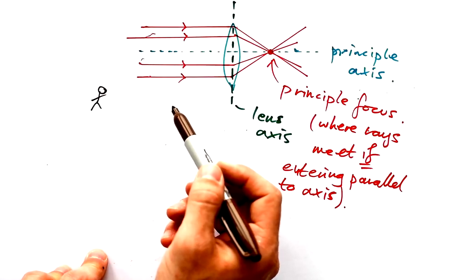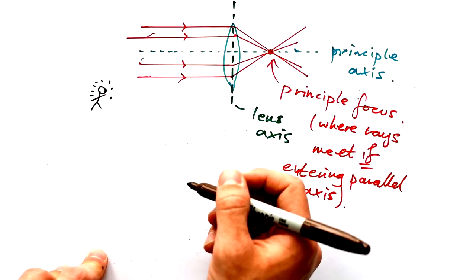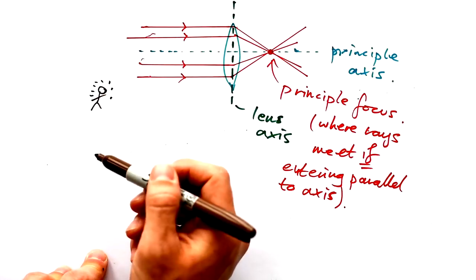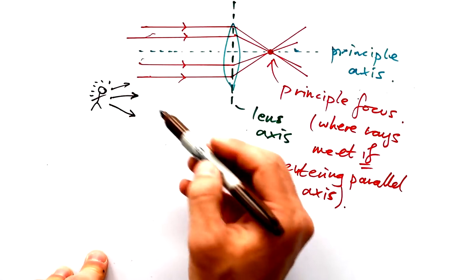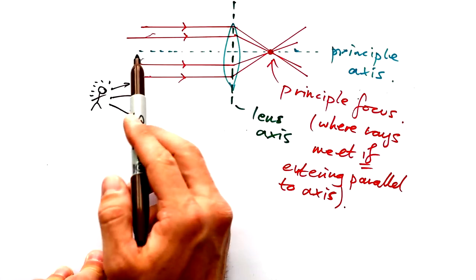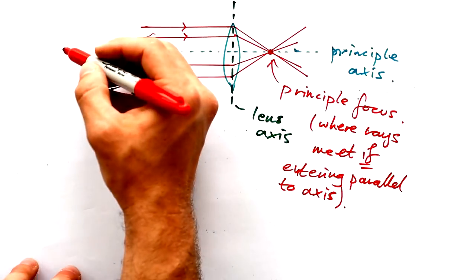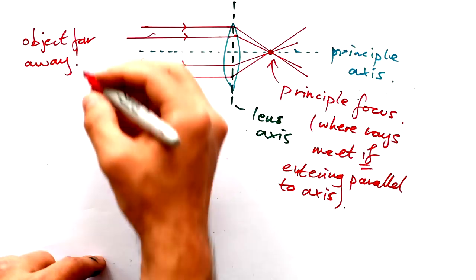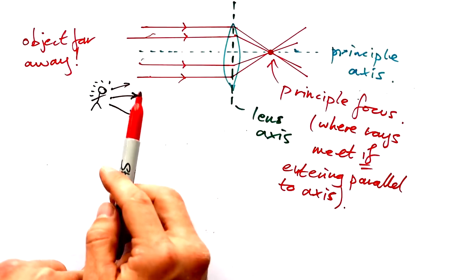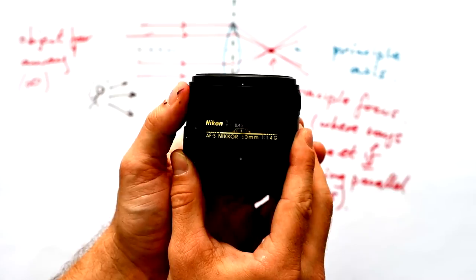Where is this light coming from? Is it from someone's head a few feet away? No, because light from someone's head spreads out in all directions. The object must be coming from very far away — if an object is very far away, the light enters the lens basically parallel. We can say it's at infinity, and I can prove this with one of my lenses here.